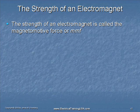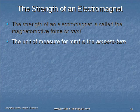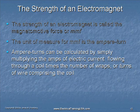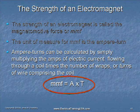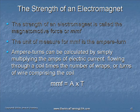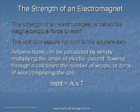The strength of an electromagnet is sometimes called the magnetomotive force, or MMF for short. The unit of measure for MMF is the ampere turn. Ampere turns can be calculated by multiplying the amps of electrical current flowing through a coil times the number of wraps, or turns of wire, comprising the coil. In other words, MMF equals A times T, where A is the number of amps flowing through the coil and T is the number of turns of wire that comprise the coil. So you can see by this formula, if the amps go up, the MMF increases, and that is the strength of the electromagnet.